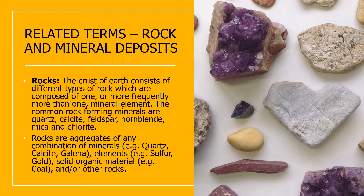Now we will discuss about rock and mineral deposits. The crust of earth consists of different types of rocks which are composed of one or more, frequently more than one, mineral element. The common rock-forming minerals are quartz, calcite, feldspar, hornblende, mica and chlorite. Rocks are aggregates of any combination of minerals, elements, solid organic material and/or other rocks.